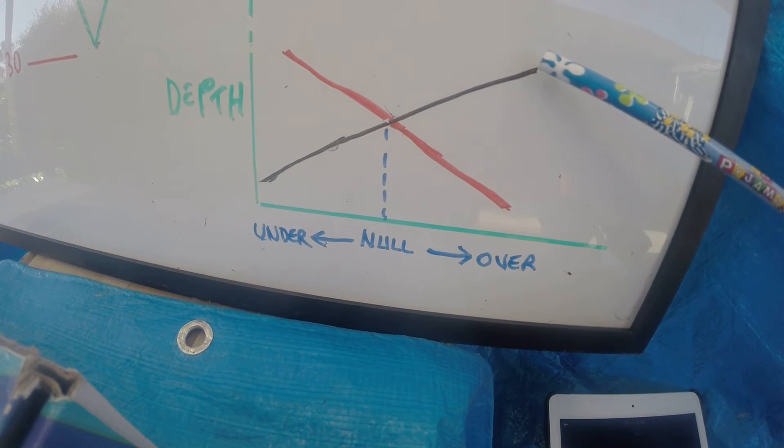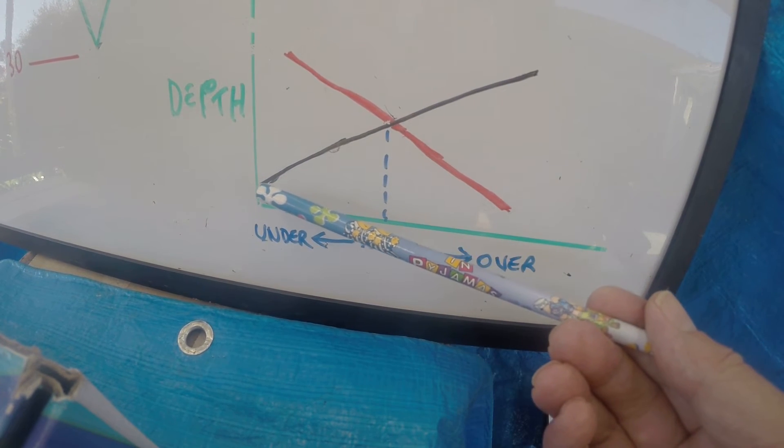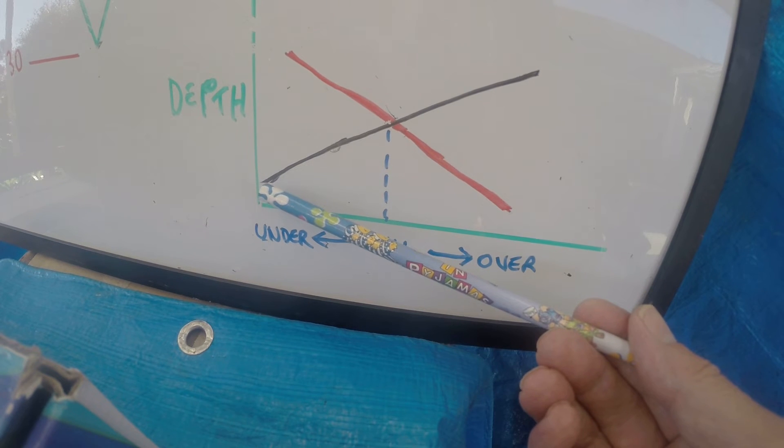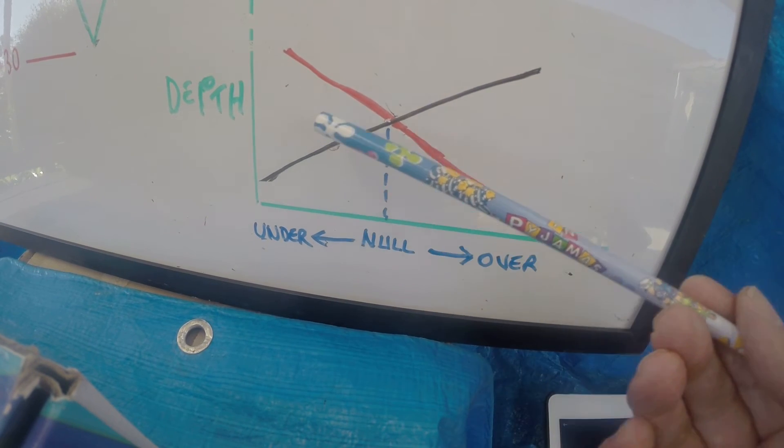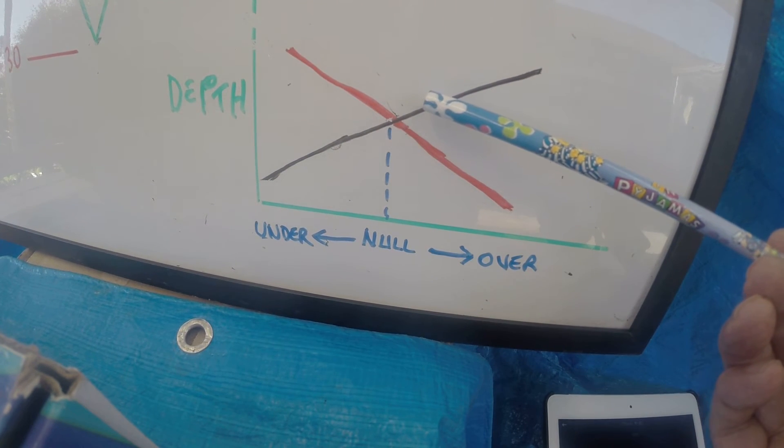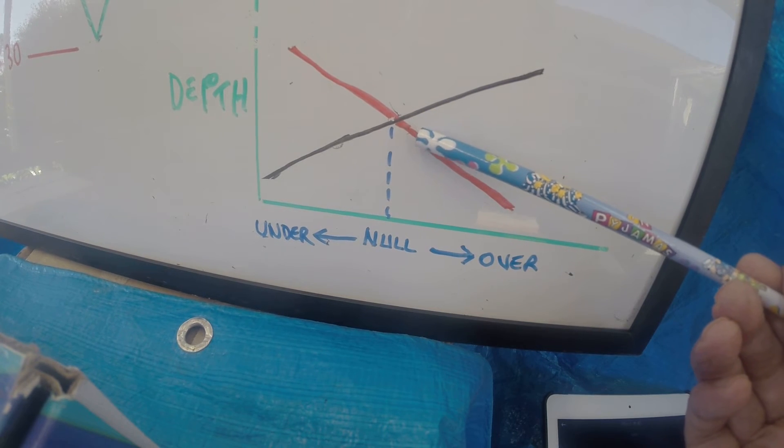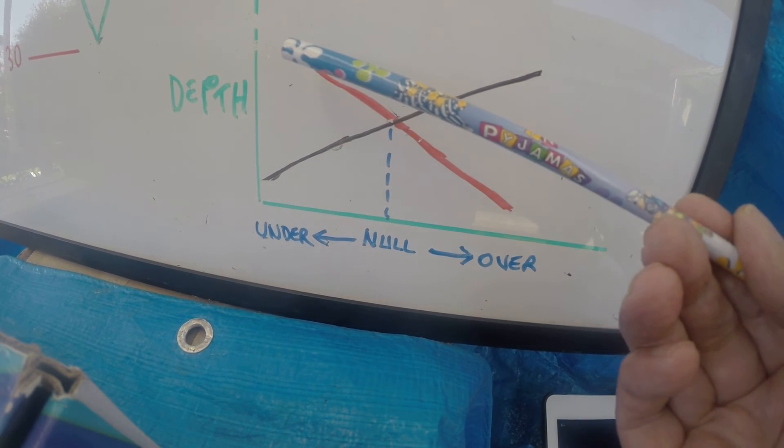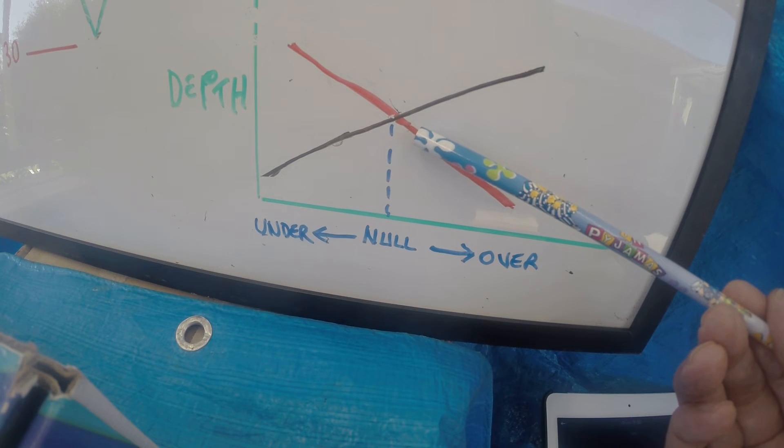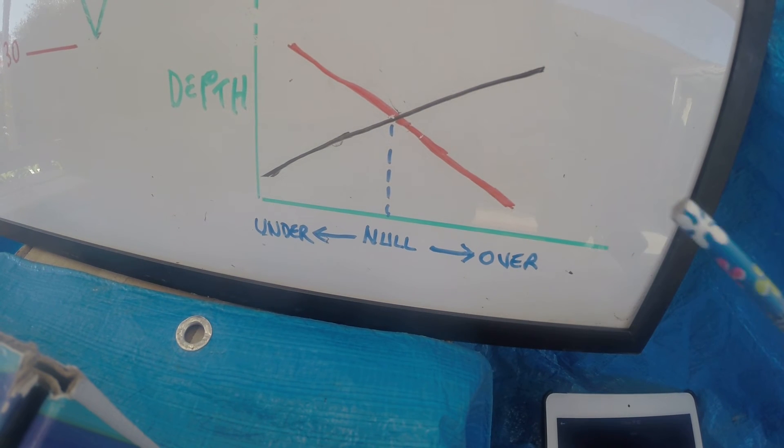And if you go over NULL, your sensitivity of the large targets increases, but the sensitivity of the small targets, as you can see here, drops right off. So, that is why you never, with a small coil, go above NULL, which you'll find, you'll see here, with a small coil, the red line, if you're above NULL, your sensitivity of the small targets is dropping off all the way down here. So, it's important.